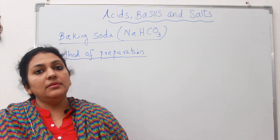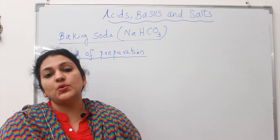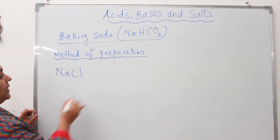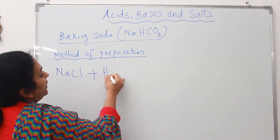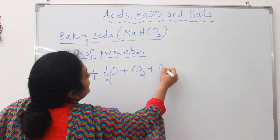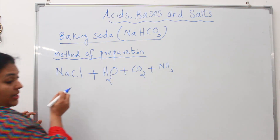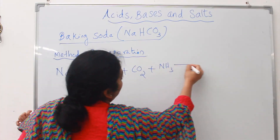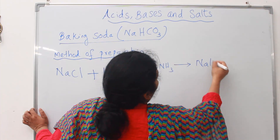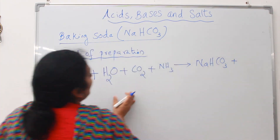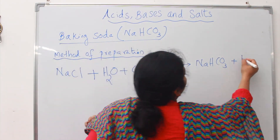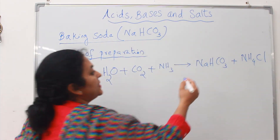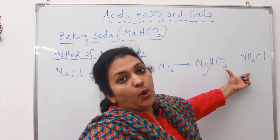For making baking soda, sodium chloride is used as one of the raw materials. When sodium chloride is reacted with water, carbon dioxide, and ammonia, we get baking soda NaHCO₃ and also one more salt which is ammonium chloride, having the chemical formula NH₄Cl.